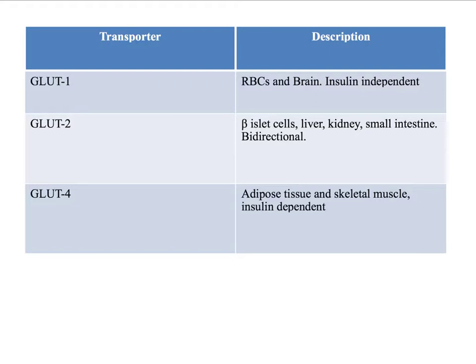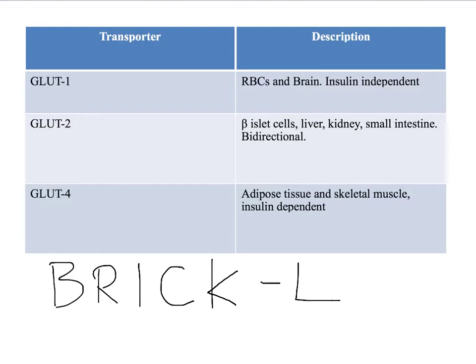Glucose 4 transporters are mainly found in adipose and skeletal muscle, and these transporters are insulin dependent — insulin must be present in order for glucose to go into these cells. One way to remember which areas of the body have insulin independent transporters is by the acronym BRIC-L: B for brain, R for red blood cells, I for intestine, C for cornea, K for kidney, and L for liver.